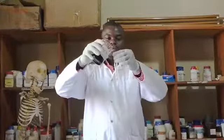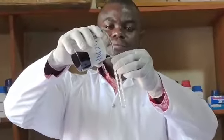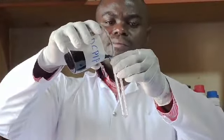I'm going to repeat the same using solution Y. I get my DCPIP and then pour one cubic centimeter. Again, take note of the original color and state of what is in the test tube. First, it is a blue solution.